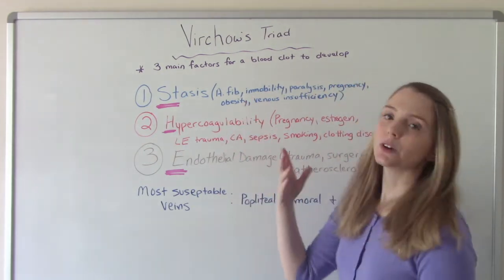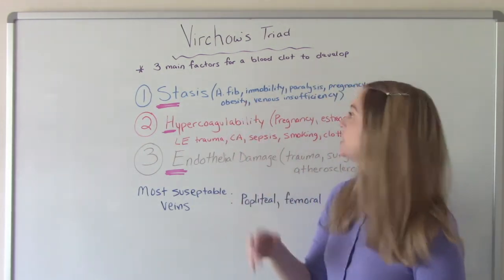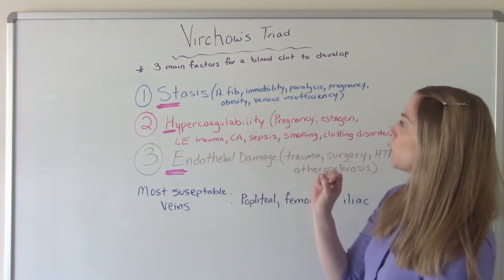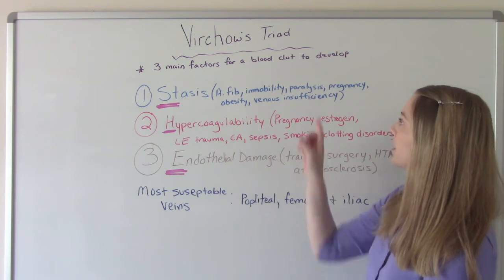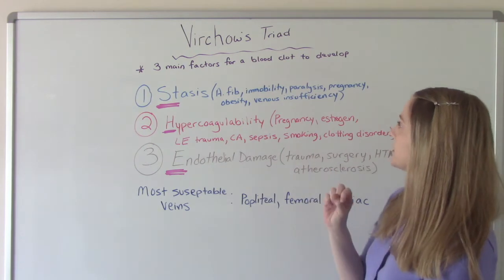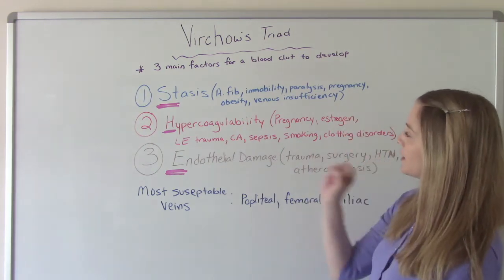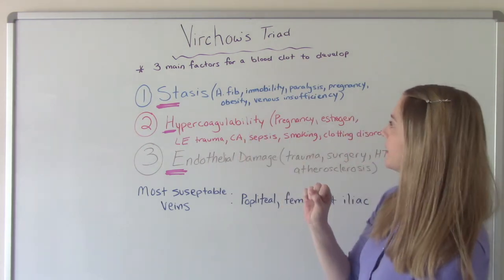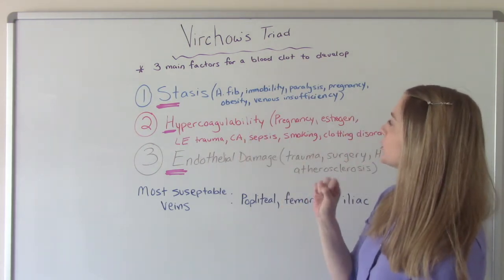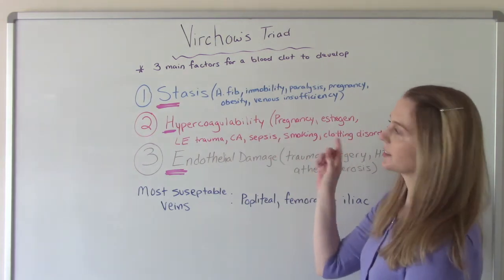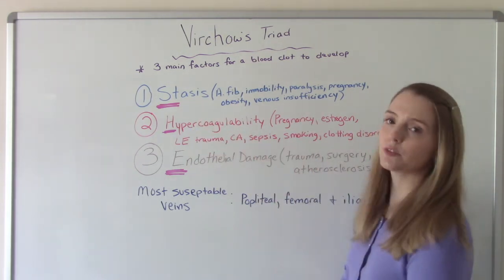Some common conditions that can cause stasis of blood: AFib — atrial fibrillation — prolonged immobility or paralysis, pregnancy, obesity, and any sort of venous insufficiencies.